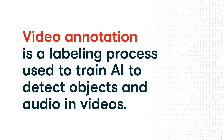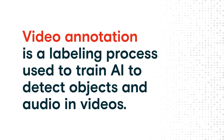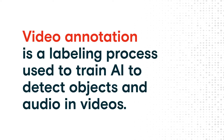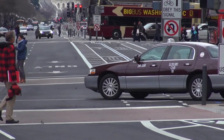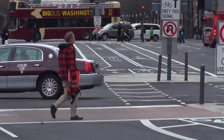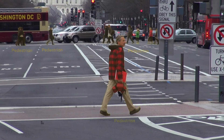Video annotation is a labeling process used to train AI to detect objects and audio in videos. Autonomous vehicles are a notable use case of video annotation.